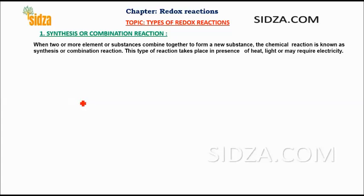Hi friends. In this video we will discuss the different types of redox reactions. In our last video we learned what a redox reaction is — a reaction in which one substance gets oxidized and another gets reduced. Now we will learn the different types of redox reactions.